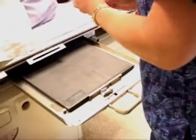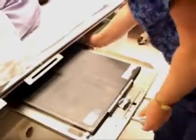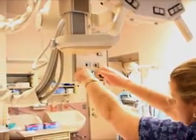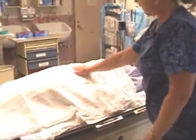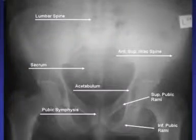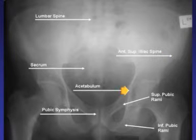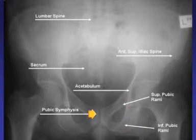The next important films are pelvic X-rays. AP pelvic films are important to ascertain injuries, especially after high-energy trauma such as a fall from height or high-speed MVAs. They can be helpful as adjuncts to ascertain areas of hemorrhage, since pelvic fractures can be associated with significant retroperitoneal bleeding. There are various anatomical structures visible in a normal pelvic X-ray: the lumbar spine, the sacrum, the anterior superior iliac spine, the acetabulum, the superior and inferior pubic rami, and the pubic symphysis.